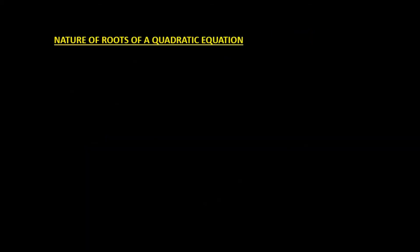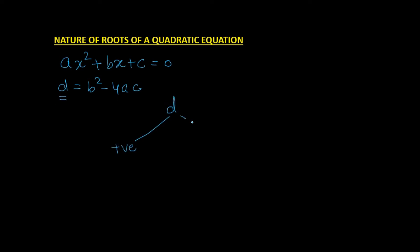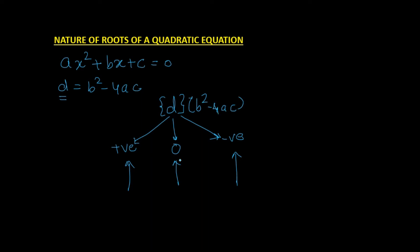Let us see what we mean by the nature of the roots. We have ax² + bx + c = 0 and the discriminant D = b² − 4ac. D is a number: it can either be positive, negative, or zero. We will see all three cases and what kind of roots we get depending on the value of the discriminant.